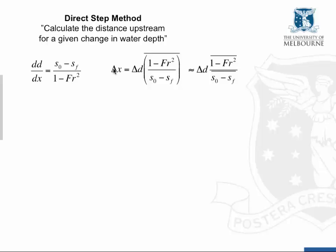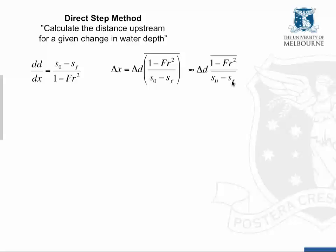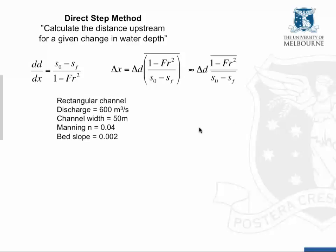The step distance that we are going to calculate — the terms 1 minus Froude number squared, and the difference between the bed gradient and the energy gradient — are the average over that step distance Delta X, which we're going to approximate in our analysis.